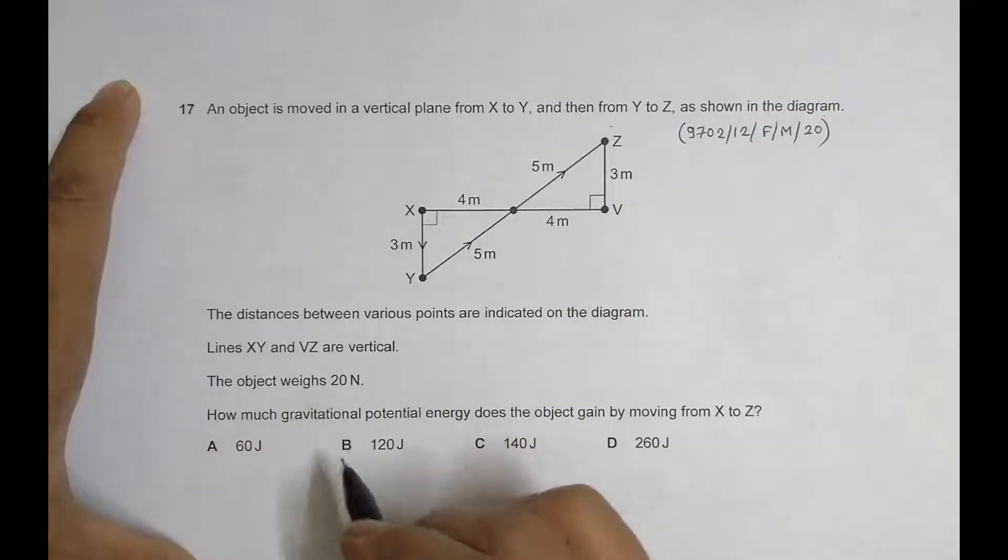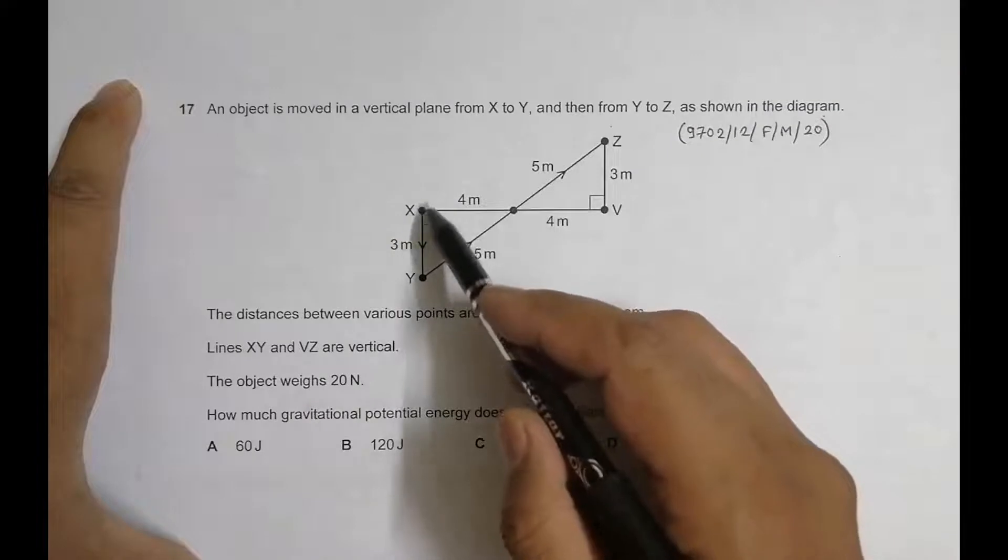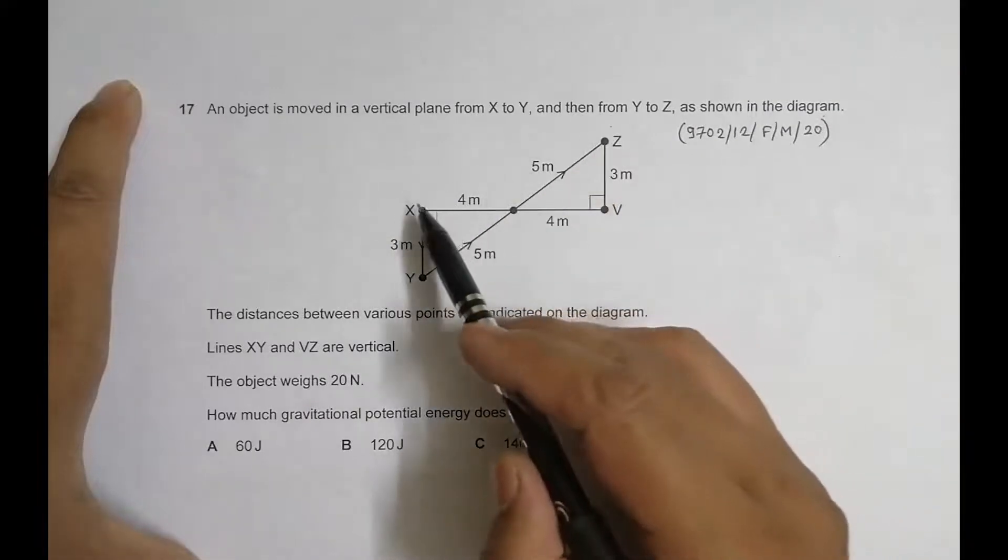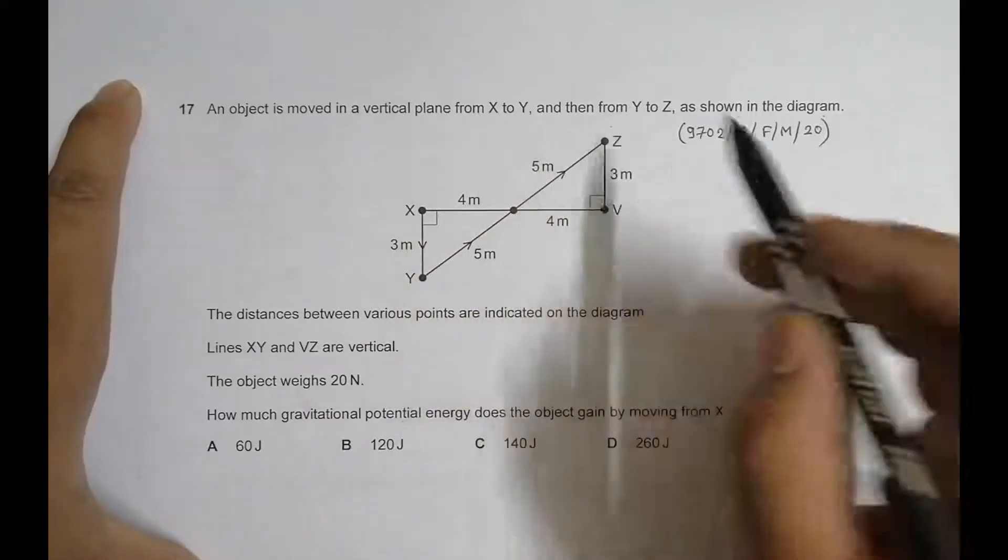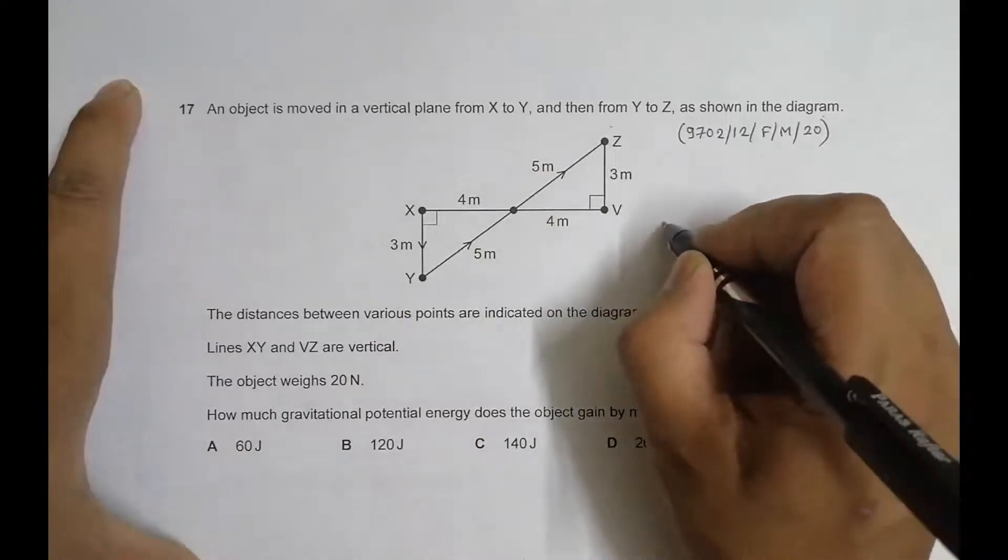Lines XY and VZ are vertical. The object weighs 20 Newtons. And of course, how much gravitational potential energy does the object gain by moving from X to Z? So it moves from here to here, but the initial is X and the final is Z. So we have to find the increase in gravitational potential energy.